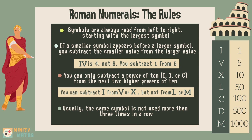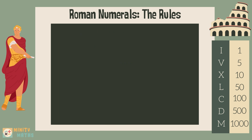Let's look at some examples. III is the number 3, as we have three lots of ones.